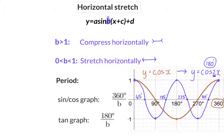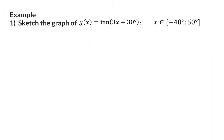Let's have a look at an example like that. Sketch the graph of tan(3x + 30°) for the interval of minus 40 to 50 degrees. Here we have two horizontal transformations. Firstly, we have the b value of 3, which will compress this graph horizontally. Then we also have a shift. However, it is very important to realize that this shift is not a full 30 degrees. To determine the shift, the equation should first be written in the standard form, and to do that, the 3 should be removed as a common factor.